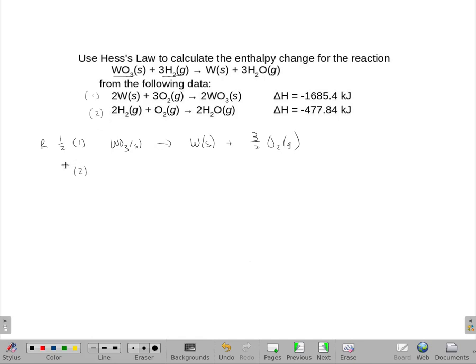So I'm going to take equation two and multiply by three and divide by two. Multiply by what I want, divide by what I have. And that would give me three hydrogens and three halves of an O2. I'll make sure I put phases there because sometimes those change. And this will be just three waters.